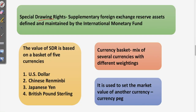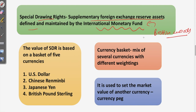Special Drawing Rights (SDR) is a supplementary foreign exchange reserve asset defined and maintained by the IMF, the International Monetary Fund. With the collapse of the Bretton Woods system in 1973 and the shift of major currencies to floating exchange rate regimes, reliance on SDR as a global reserve asset lessened. It was created to reduce selling pressure on the dollar. Currently, the value of SDR is based on a basket of five currencies.